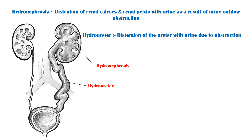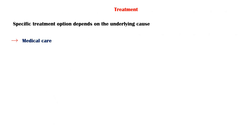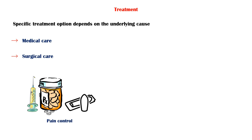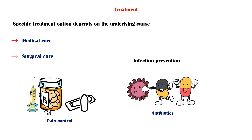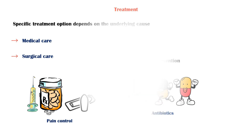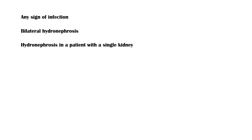The specific treatment of hydronephrosis depends on the underlying cause. In general, treatment can be divided into medical care and surgical care. Medical care includes pain control with analgesics and infection prevention with antibiotics. Any sign of infection, bilateral hydronephrosis, or hydronephrosis in a patient with a single kidney should warrant urgent intervention.